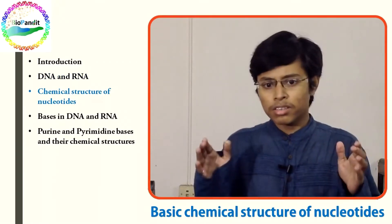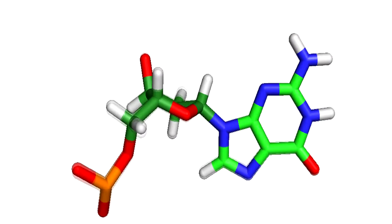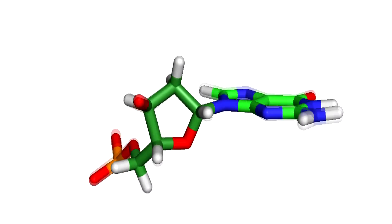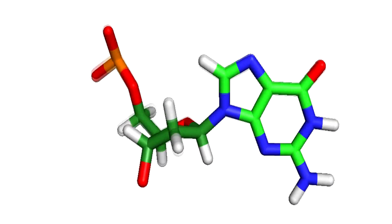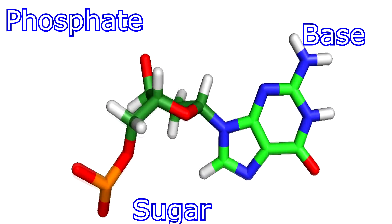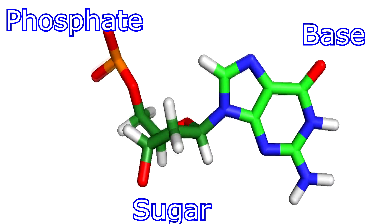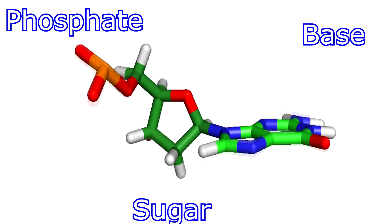This is what a nucleotide looks like. As you can see, there are three basic parts of it: a base, a sugar, and a phosphate.